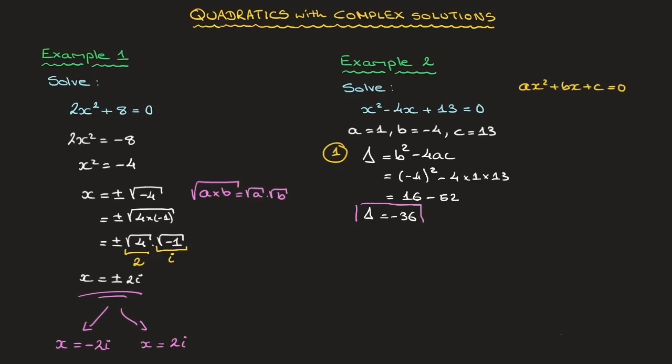That's our first step done. You may remember that when working with real numbers, if the discriminant delta is negative, we stop and state there are no real solutions. But when working within the set of complex numbers, if delta is negative, then there will be two complex conjugate solutions.